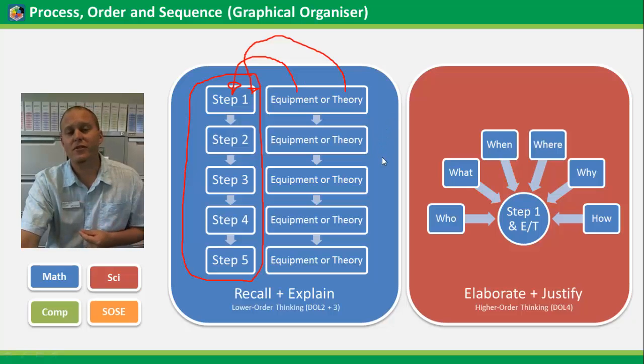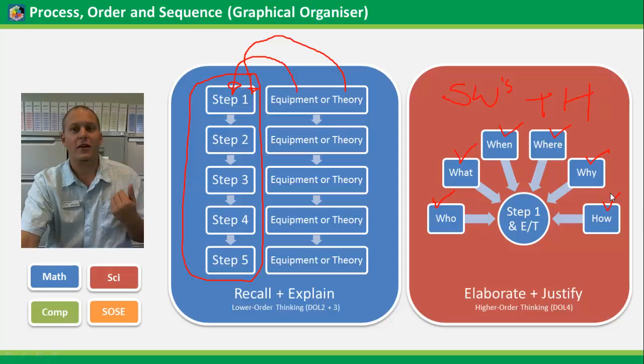The way I try to push this into higher-order thinking is I get them to do one of these five Ws plus the one H process. Please ignore the dodgy nature of my handwriting. I'm using a mouse to make it all work. But pushing the idea maybe in group discussion or individual thinking about who was actually there in step one, what actually occurred, when did it occur, where did it occur, why and then how. Can help the mind start to think, well, if I change the location, would that actually cause step two to be different? Or the next required equipment to be different?